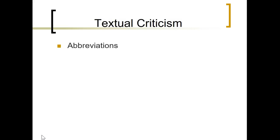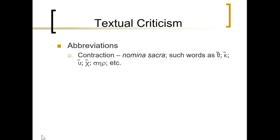Now I'll talk briefly about some abbreviations. Scribes would very often abbreviate words. Sometimes they used a technique called contraction, and this takes place especially over what's known as nomina sacra — sacred words. For instance, you'll see a contraction where just the theta is used to represent God, or the kappa — K — is used to represent kurios, the word for Lord.